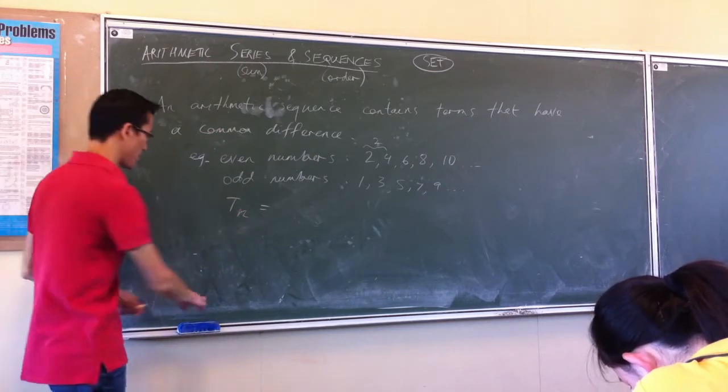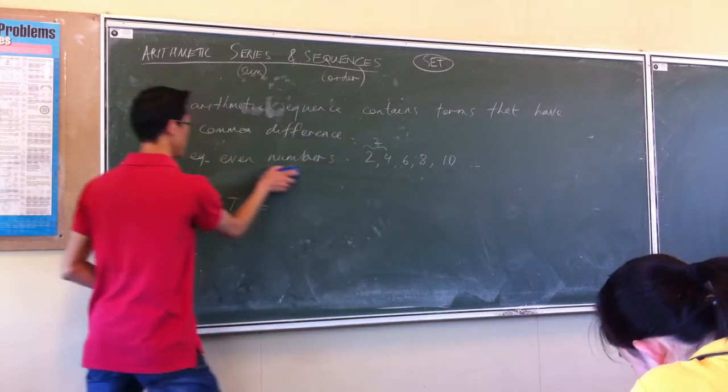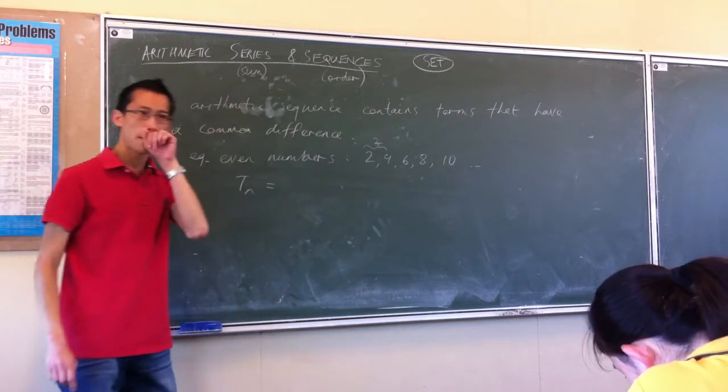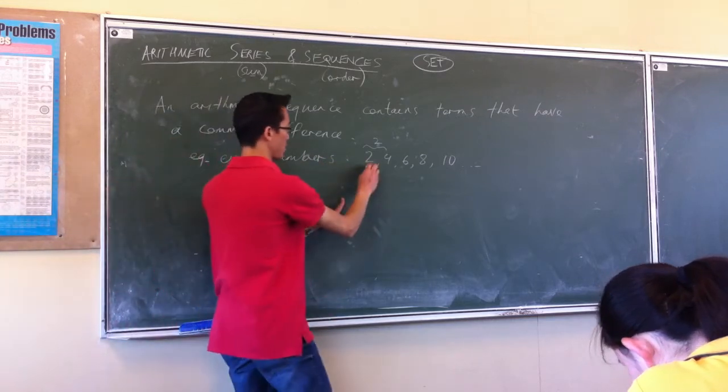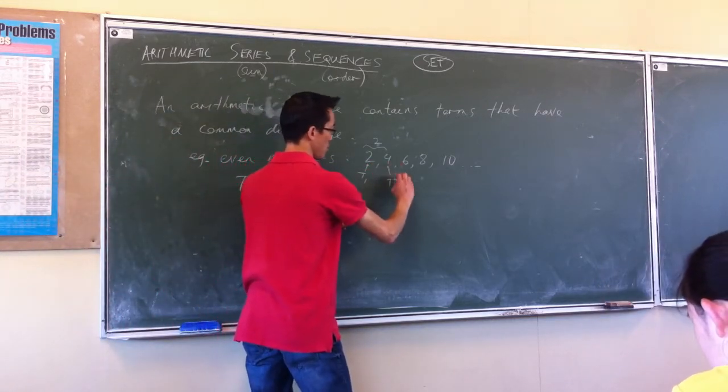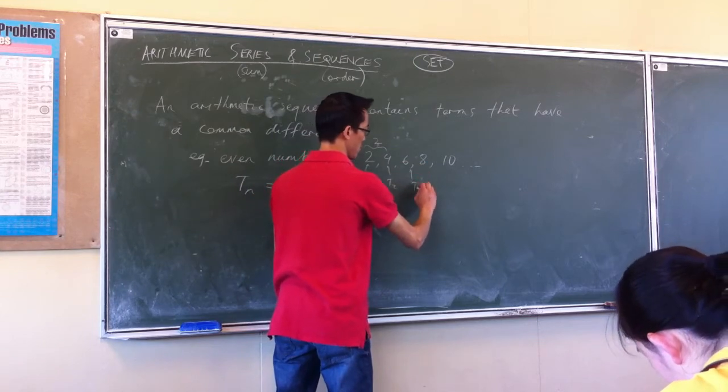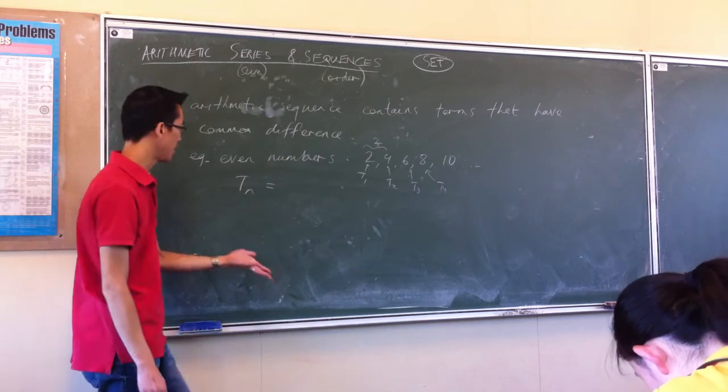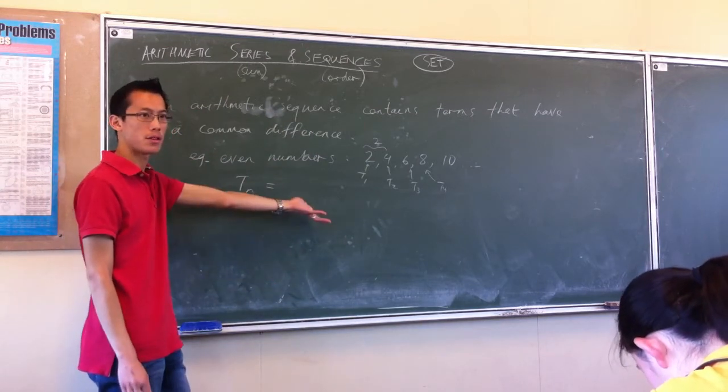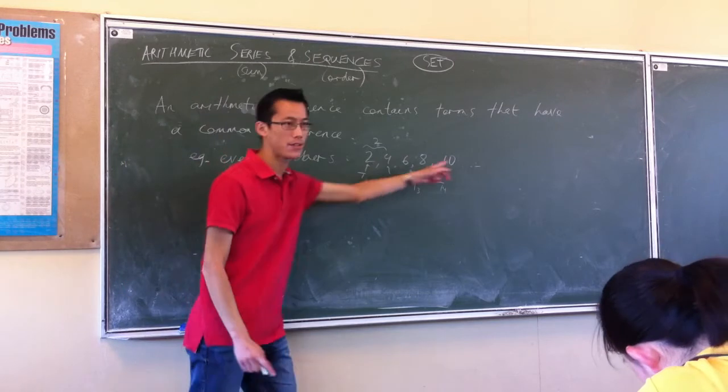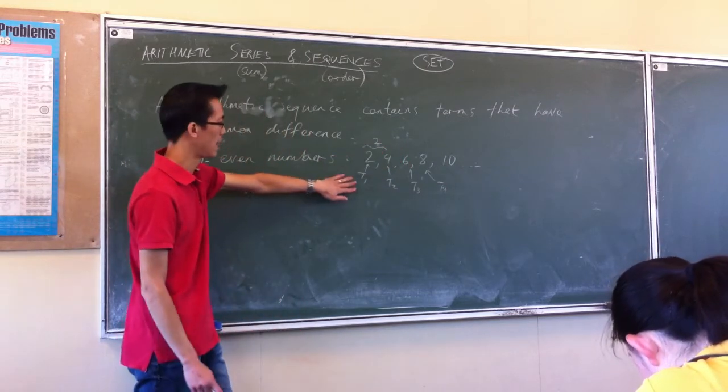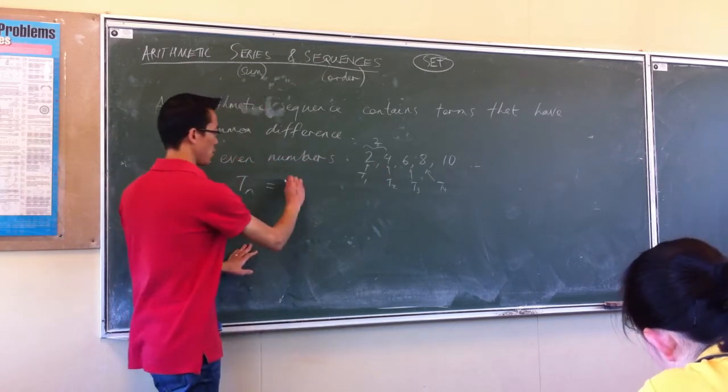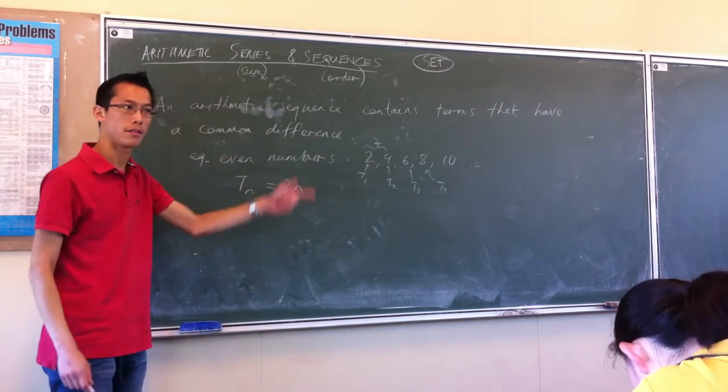So let's think about the even numbers, for instance. If you've got T1 being 2, T2 being 4, and so on, how could we define the even numbers? Well, every even number, every term is just double whatever term it is. The first term is 2, the second term is 4. So you can just define it very simply as 2n.